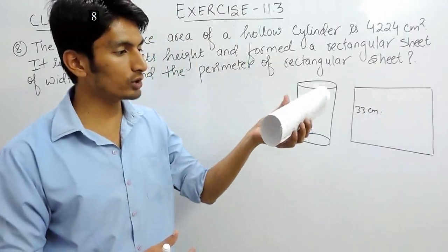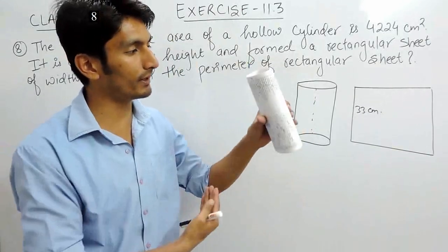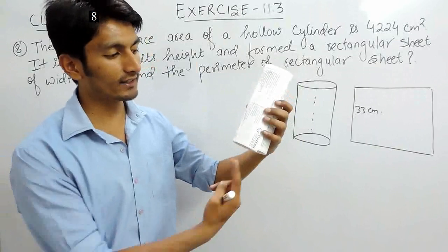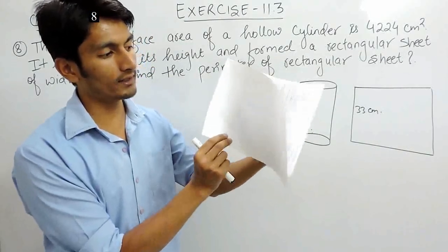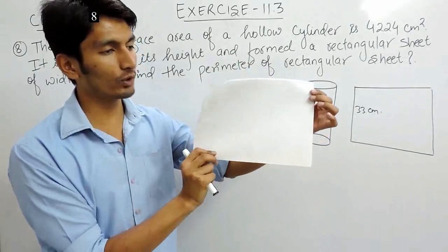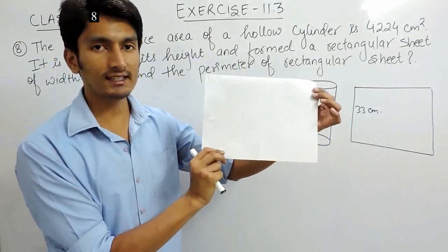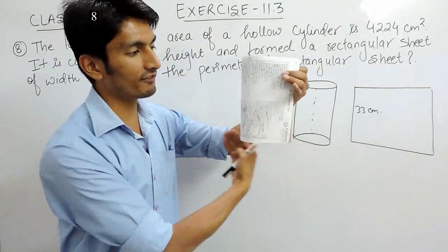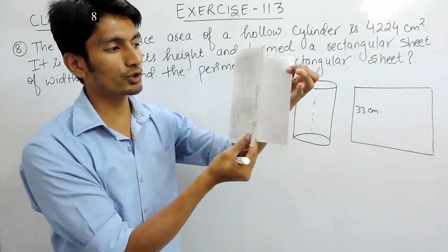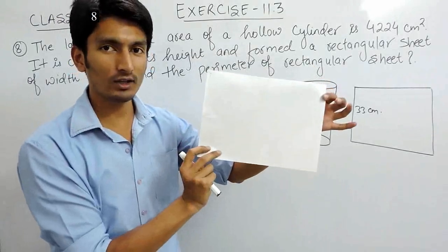This is a hollow cylinder. If I fold a piece of paper and if I cut it along its height and I open it, this will form a rectangular sheet. And one thing is clear: the curved surface area, which is this curved surface area, should be equal to the area of this rectangular sheet.